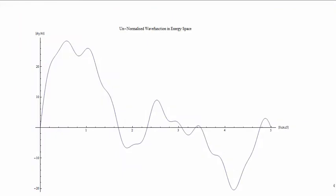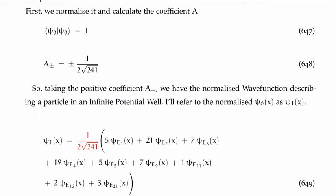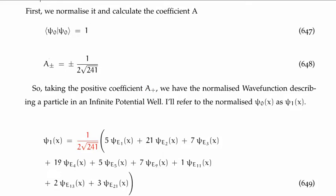If we plot psi sub zero — the unnormalized psi sub zero — we get this particular waveform. Normalizing a is very straightforward; we simply take what's known as the inner product. I used Mathematica to calculate the normalization constant, and a plus/minus is given by plus or minus one over two times the square root of 241. For convenience I'm taking the a-plus normalization constant, giving our normalized wave function. I'm going to call the normalized psi sub zero as psi sub one, which is given at the bottom center of your screen.